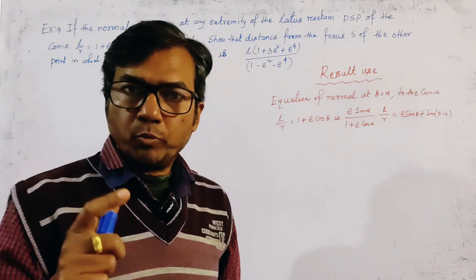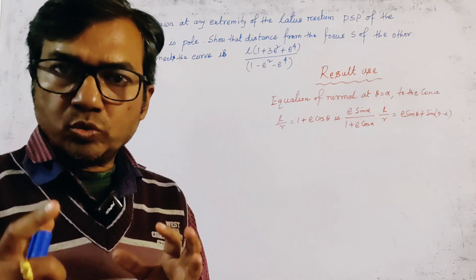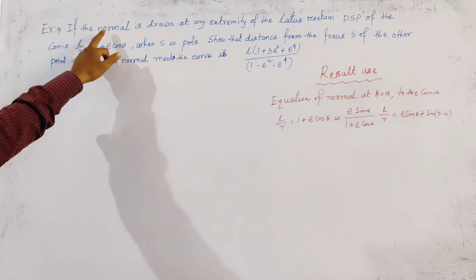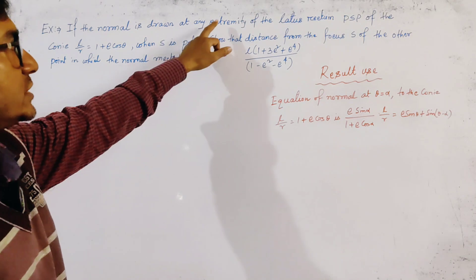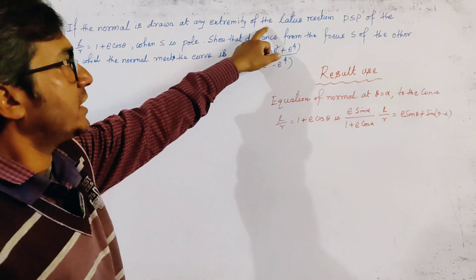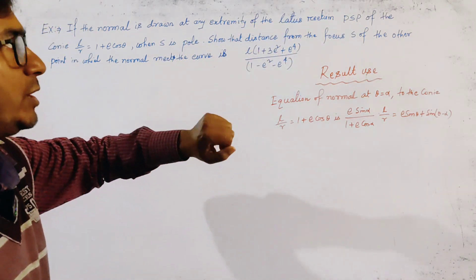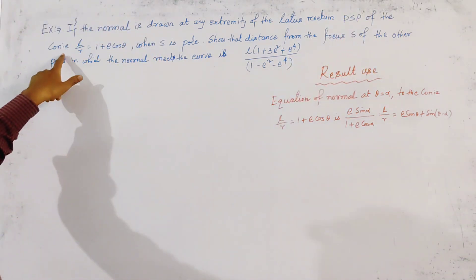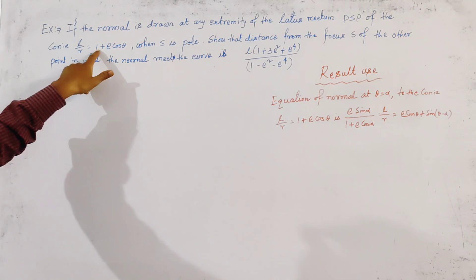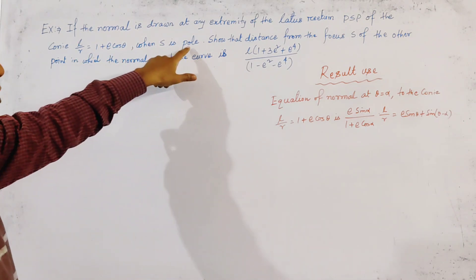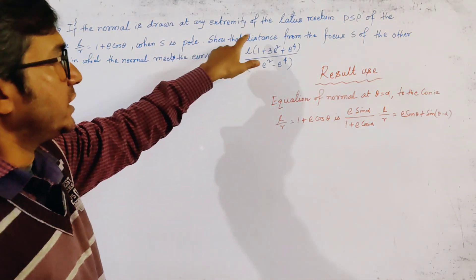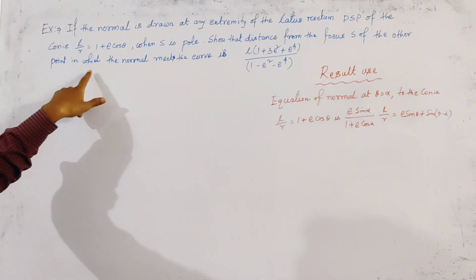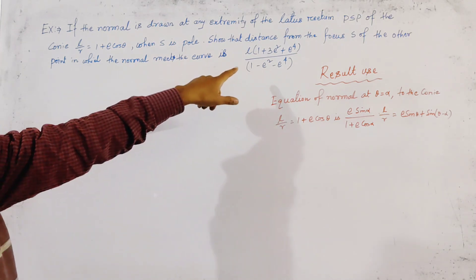Today's problem is from the polar equation of two-dimensional geometry. The problem is: if the normal is drawn at any extremity of the latus rectum — the extremities are named P and P' — of the conic L/R = 1 + E cos θ, where S is the pole, then show that the distance from the focus S to the other point where the normal meets the curve is given by a specific result.